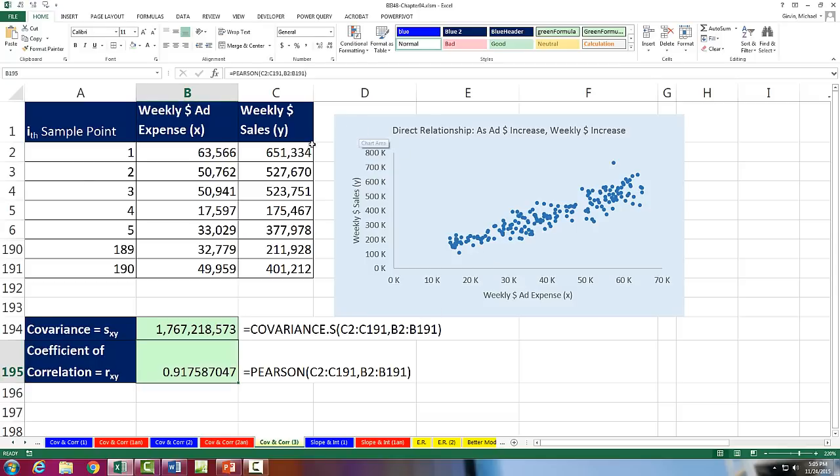Last video, we took this dataset. We had 190 records, with x equals weekly ad expense and y equals weekly sales. We plotted it to see if there was a relationship between weekly ad expense and weekly sales. The markers show us that as x is increasing, y tends to be increasing. From our visual interpretation that there's a positive or direct relationship, we then learned how to calculate covariance and coefficient of correlation.